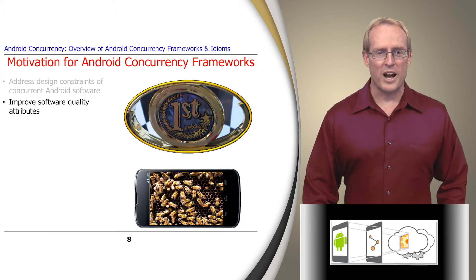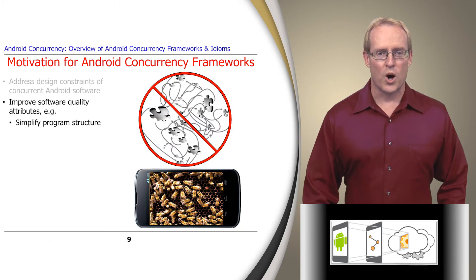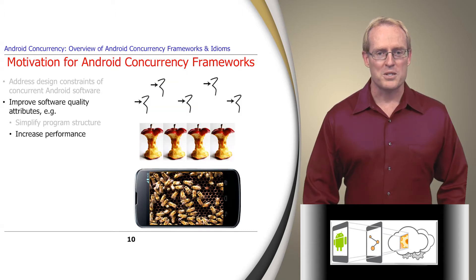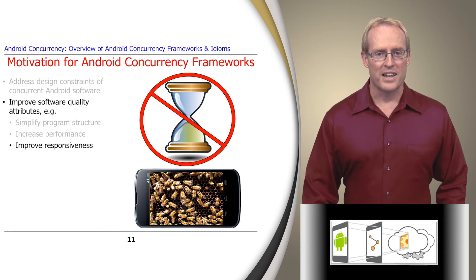The second motivation for Android's concurrency frameworks stems from the benefits of concurrency, such as simplifying program structure to avoid overly complex and tangled event-driven software architectures, increasing performance by overlapping communication and computation to run in parallel on multi-core platforms, and improving responsiveness by processing short-duration user-facing operations in a different thread than other long-duration background operations.